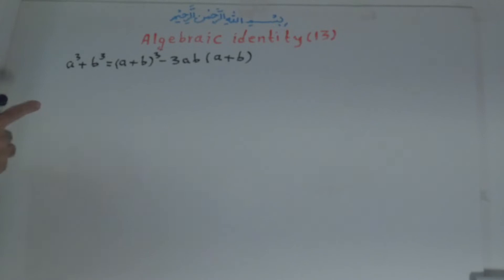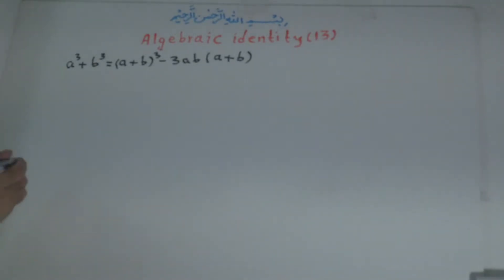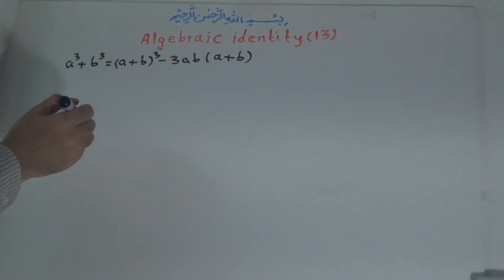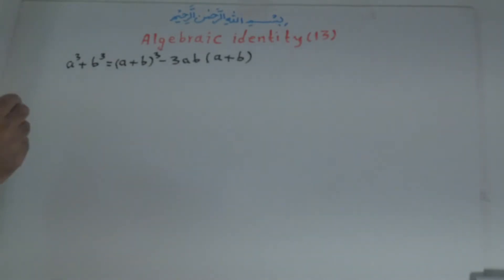Now we should prove whether this is true or not. To prove it, we simplify the right side of the equality. If the right side becomes the same as the left side, then this identity is true. Otherwise it is false.